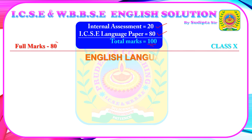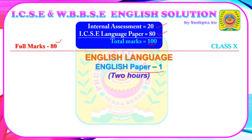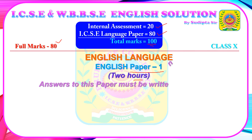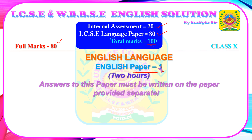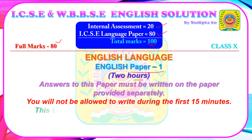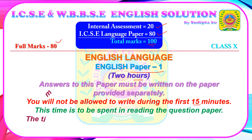The full marks is 80 and ICSE English Language Paper is also known as English Paper 1. The given time limit is 2 hours. Here are some important notes you need to know, which will also be written at the top of your question paper. The answers to this paper must be written on the paper provided separately — the answer sheet will be supplied to you by the board. You will not be allowed to write during the first 15 minutes; this time is to be spent reading the question paper.